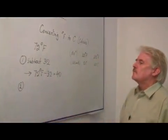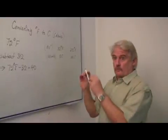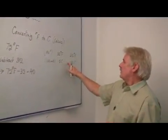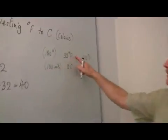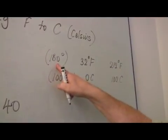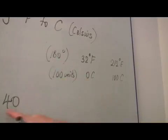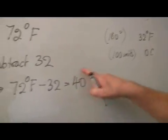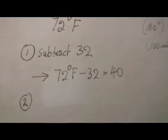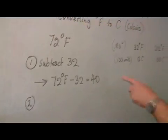The second is we have to use the fraction, because in this interval there are 100 units, but in the Fahrenheit interval there are 180 units, which means that these 40 Fahrenheit units represent less centigrade units. The centigrade unit is bigger.